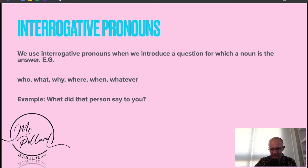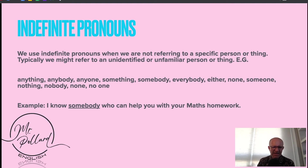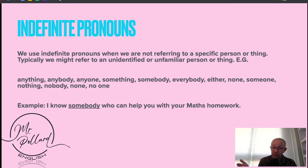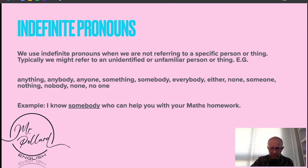Indefinite pronouns — we use these when we are not referring to a specific person or thing. Typically, we might refer to an unidentified or unfamiliar person or thing. For example: anything, anybody, anyone, something, somebody, everybody, etc. Example: I know somebody who can help you with your maths homework. But it's indefinite — it's deliberately vague. Writers use this all the time; you might wish to use it in your own writing to help create tension and mystery.